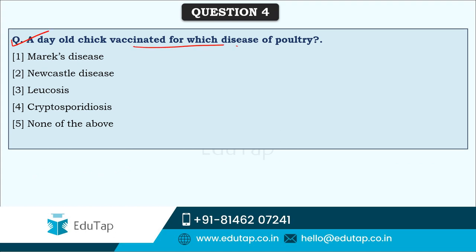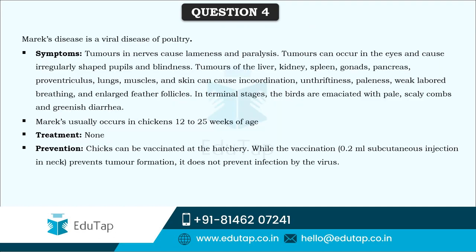Next question: a day-old chick is vaccinated for which disease in poultry? There is a vaccination schedule that needs to be followed for poultry, just like for human beings. A day-old chick is vaccinated for Marek's disease. Marek's disease is a viral disease of poultry wherein symptoms include tumors in nerves causing lameness and paralysis. Tumors can occur in eyes causing irregularly shaped pupils and sometimes even blindness. Tumors can also be observed in organs like liver, kidney, spleen, gonads, pancreas, proventiculus, lungs, muscles, and skin.